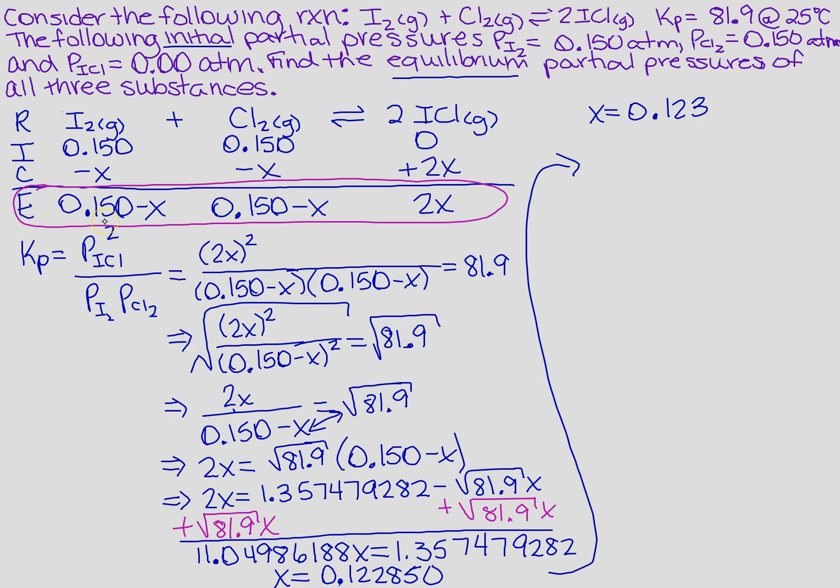I'm just going to plug in the X in there, do the subtraction or just do the multiplication. So the pressure for I sub 2 is going to equal 0.150 minus 0.123, which gives me approximately 0.027. Remember, this is pressure, so it's going to be atmospheres.